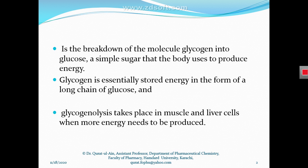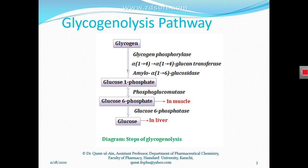Glycogenolysis is the process of breakdown of glycogen into glucose, and this process produces energy. This pathway takes place in the liver and muscles because glycogen is stored in our liver and muscles. Whenever our body needs energy, glycogen is converted into glucose-1-phosphate by the action of the enzyme glycogen phosphorylase.